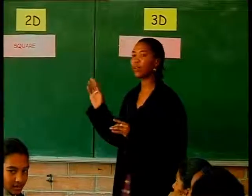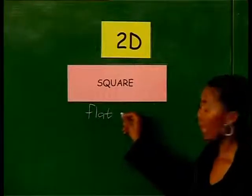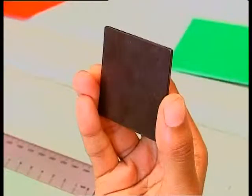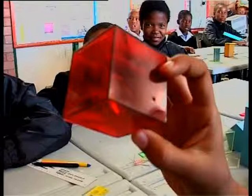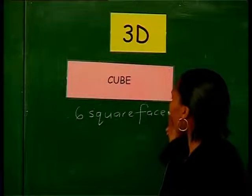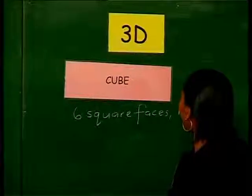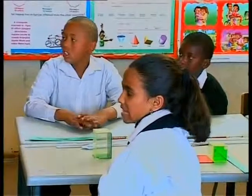So what did you find out? What is similar and what is different? Let's start in this group. What did you find out, Fatima? The difference is the square is a flat shape — it is flat — and it has four sides. While the cube has six square faces and it has height. Now from the other groups, did you all find these similarities and differences? Yes. Now we're going to move on to the rectangle and the rectangular prism.